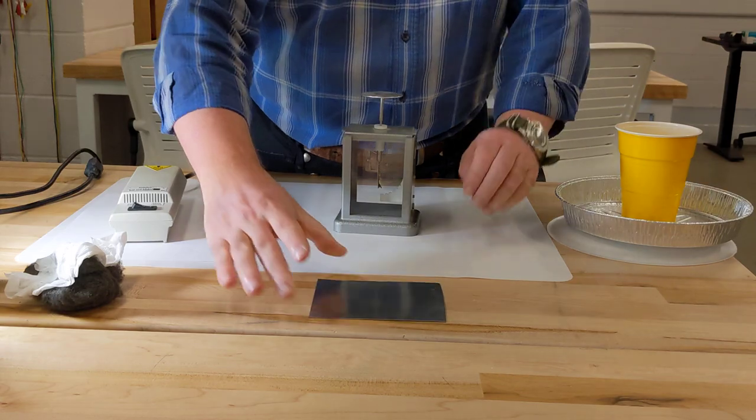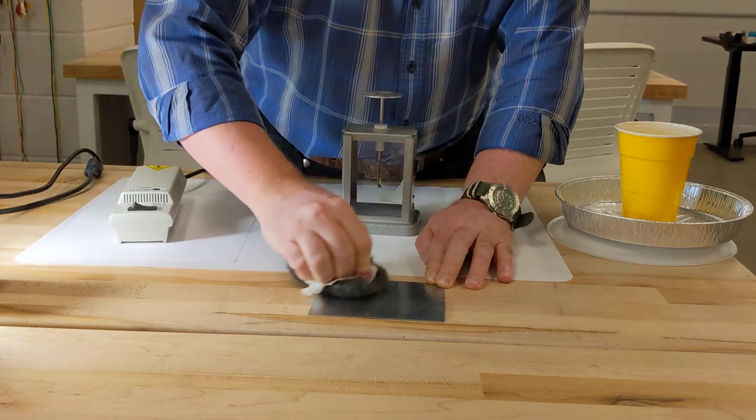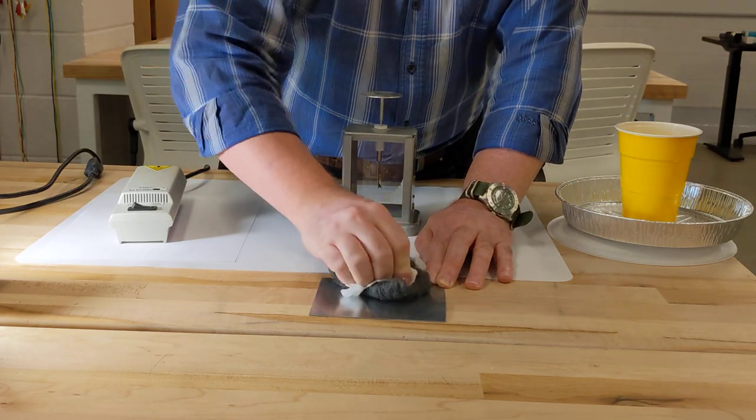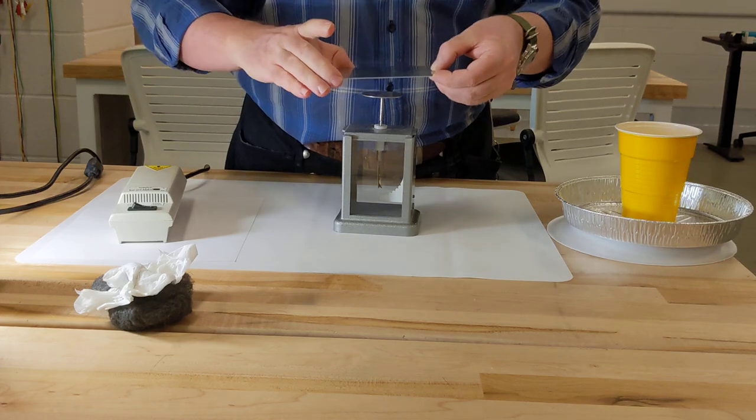First step, take the zinc plate, rub it with some steel wool to strip the oxide layer off the surface of the zinc, and we'll put it back here.